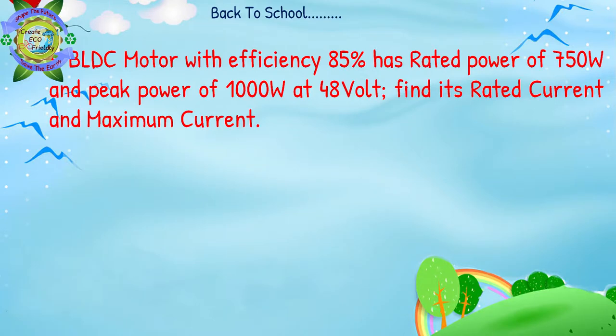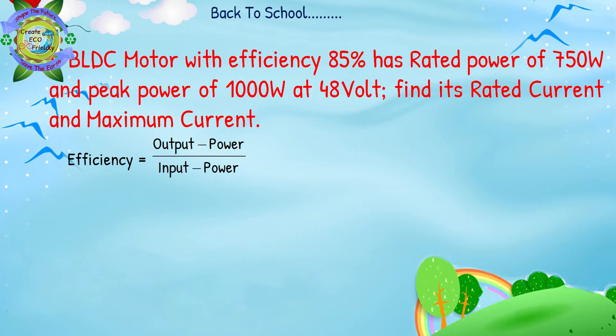इन्हें निकालें कैसे? P = Vi, तो i = P / V। अब यह power कौनसी होगी — input या output? Current input जा रहा है motor में battery के through, तो हम input power use करेंगे। Rated current और maximum current निकालने के लिए सबसे पहले input power निकालेंगे।